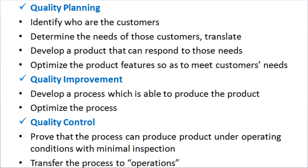The second phase, quality improvement, aims to attain levels of performance significantly higher than current levels. Improvement begins with establishment of a quality council. The duties include: identifying improvement projects, establishing project teams with proper ownership, providing teams with resources, determining causes, creating solutions, and establishing controls. The third phase, quality control, involves proving that the processes can produce the product under operating conditions with minimal inspection, and transferring those processes to operations.